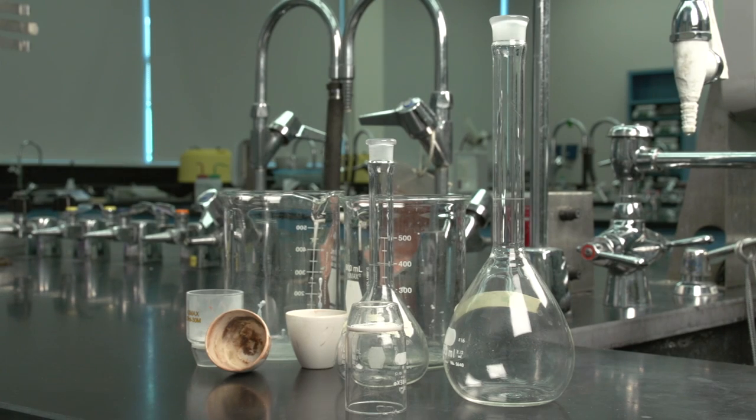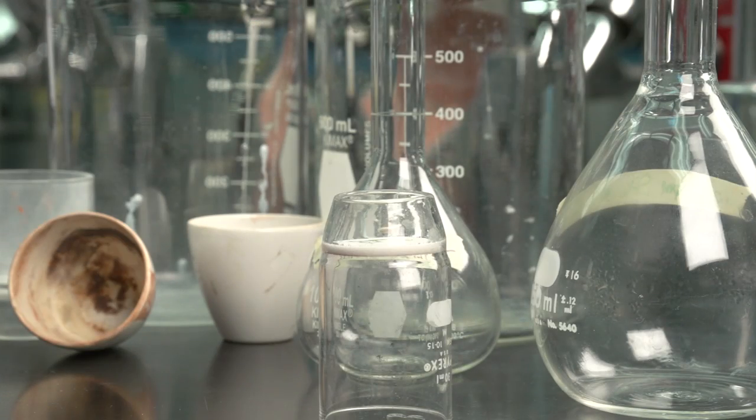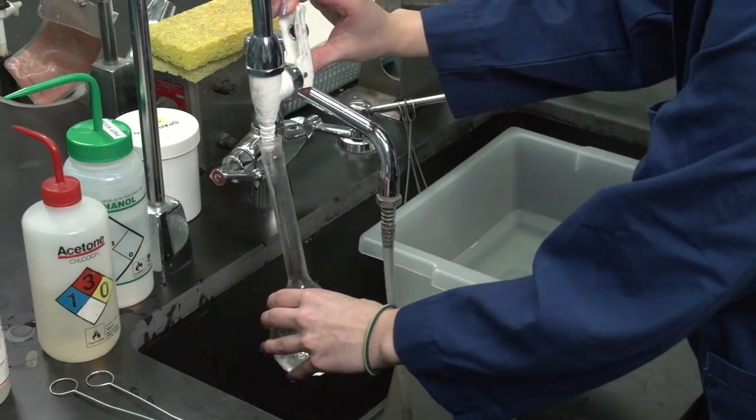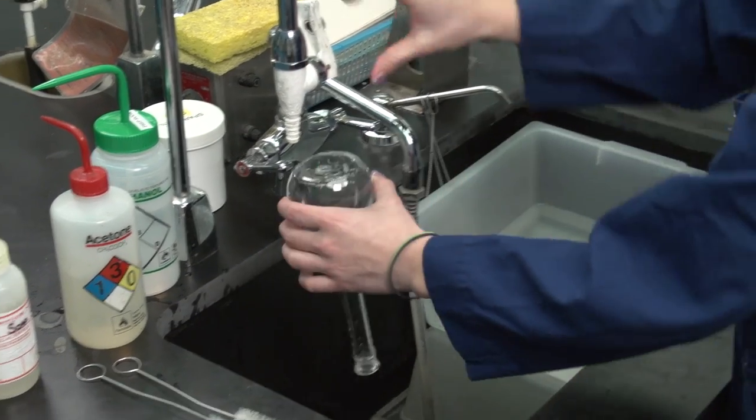Dirty glassware is one of the leading causes of experimental errors. Often glassware appears to be clean, however it may be chemically dirty. Traces of ions, soluble substances, or different solvents cause errors that can be prevented with some extra effort during washing and rinsing.